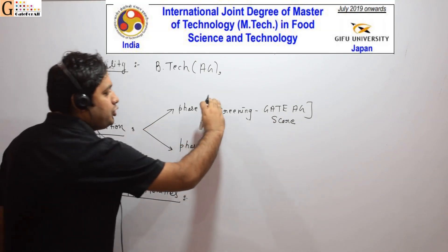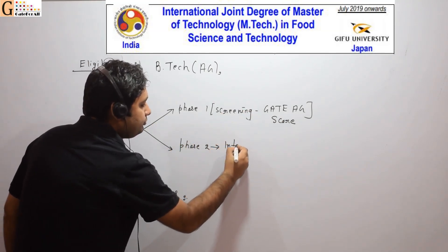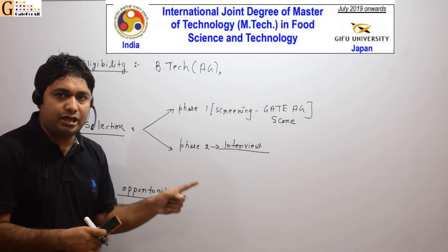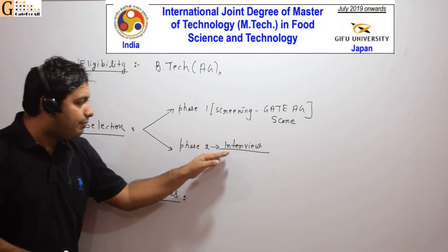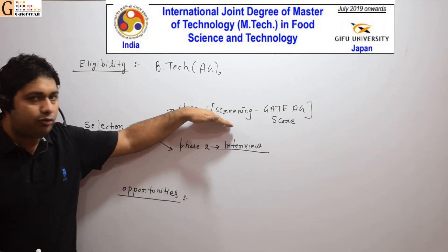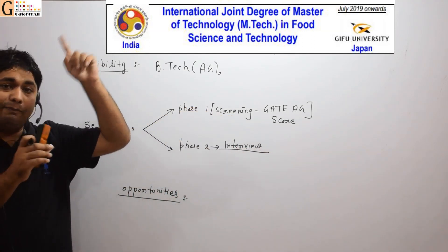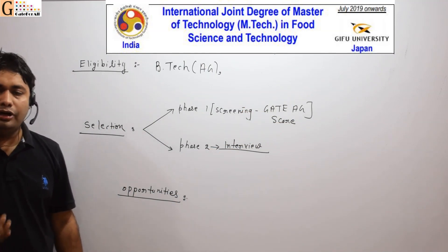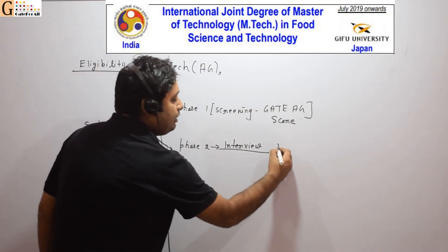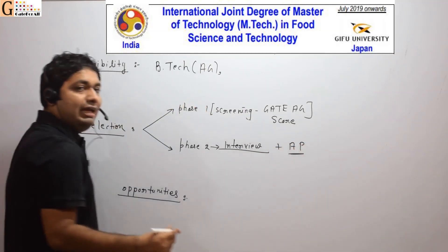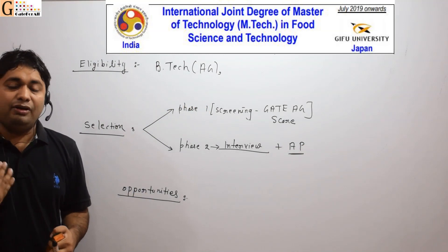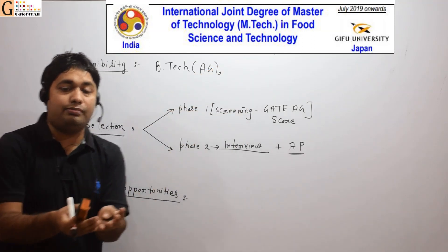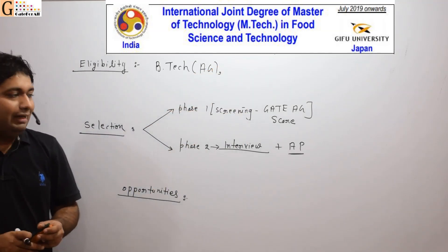Any candidates who are shortlisted will then go for an interview. The final selection will be based on the interview. Your final selection will also depend on your academic profile — academic profile means your graduation percentage, participation in any international conference, or participation in any Food Tech event. You will add all your scores to build your academic profile.